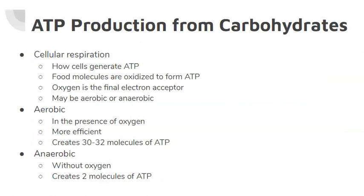ATP can be produced from carbohydrates. ATP is generated through cellular respiration. This process oxidizes, which means it removes electrons from food molecules to obtain energy as ATP. Oxygen is the final electron acceptor. There are two different pathways for cellular respiration. Aerobic is when oxygen is readily available, and aerobic respiration is more efficient than anaerobic metabolism at producing ATP. A single molecule of glucose creates 30 to 32 ATP. Anaerobic respiration is when oxygen is not present, and during anaerobic respiration, only two molecules of ATP are created.